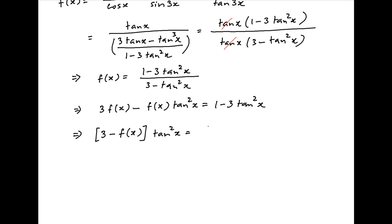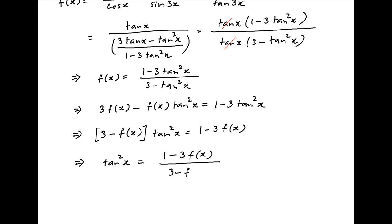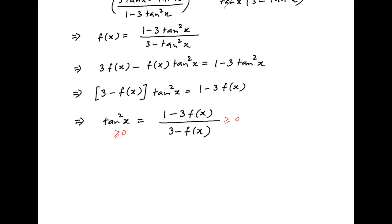This implies that 3 minus f(x) times tan²x equals 1 minus 3·f(x), and therefore tan²x equals (1 minus 3·f(x)) divided by (3 minus f(x)). On the left hand side, tan²x is always greater than or equal to 0, so the right hand side must also be greater than or equal to 0.